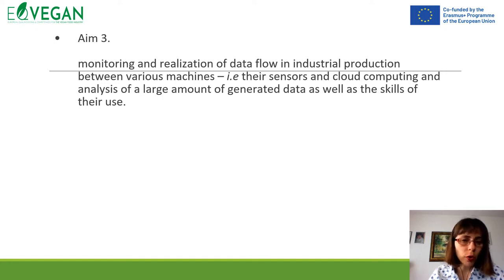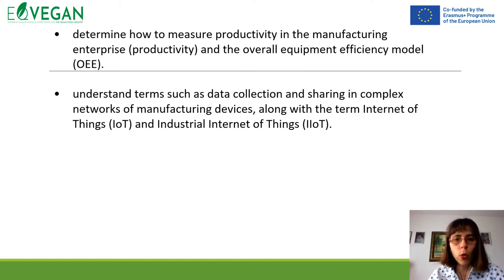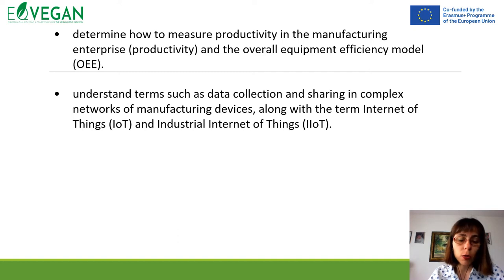In general, utilization of each machine should go towards 100% of usage. It is important to determine how to measure productivity in a manufacturing enterprise using the overall equipment efficiency model. We need all machines working without any kind of failure, and also to see where failure can come. We also need to monitor the productivity of each machine, understand terms of data collection, how it is performed, and how data are shared in complex networks of manufacturing devices — the smart factory.